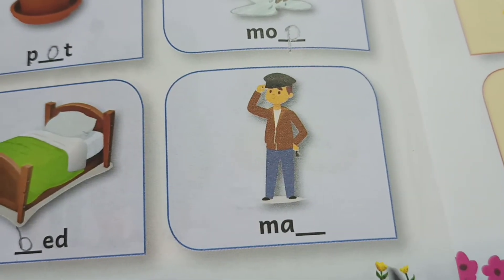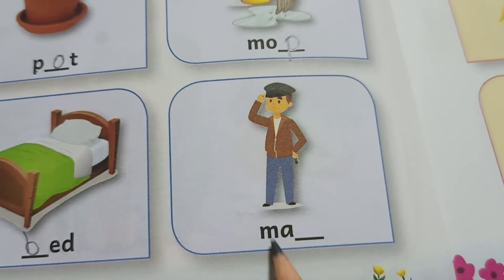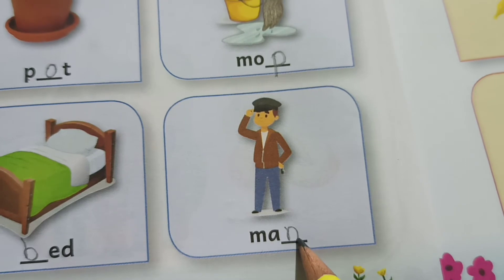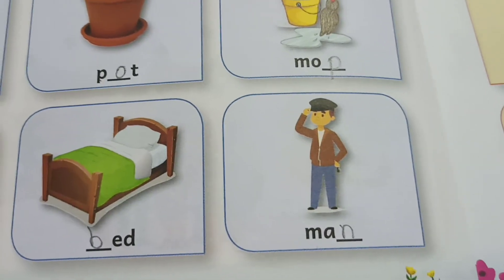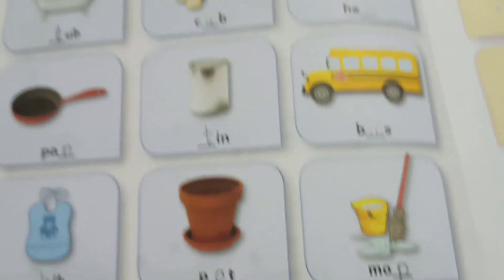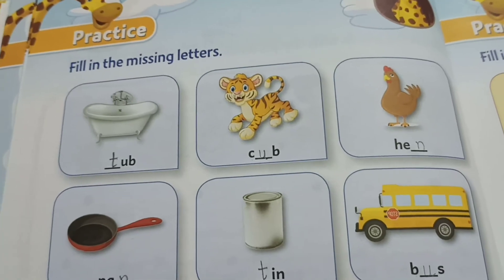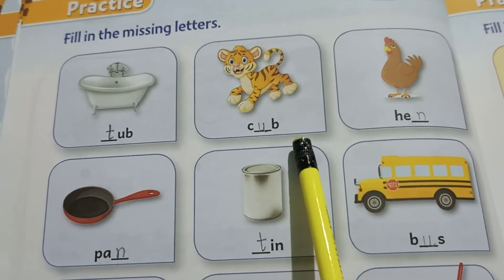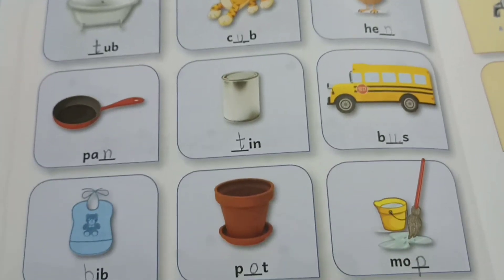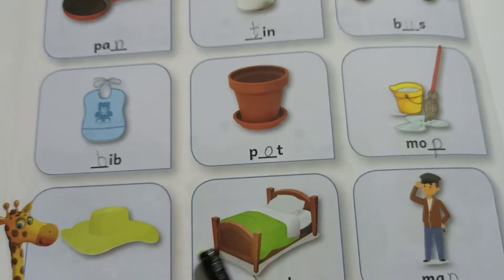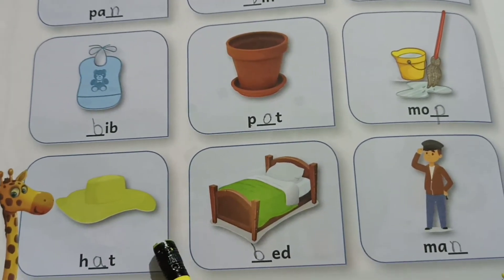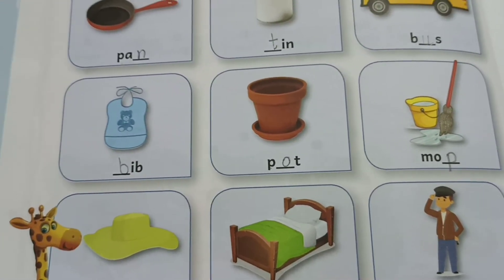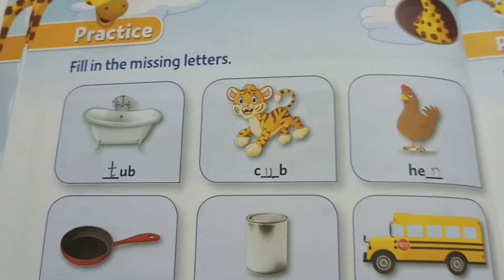Who is he? Man. M, a, n — man. So, children, you have to read these spellings and go through them. Read them perfectly. These spellings I am going to give in the missing letters test. Okay. Next page.